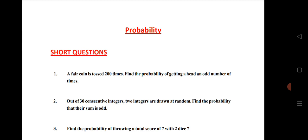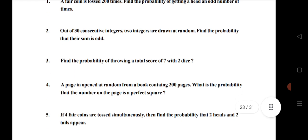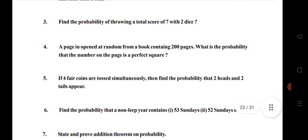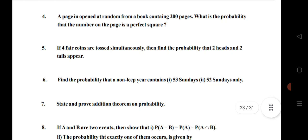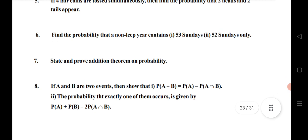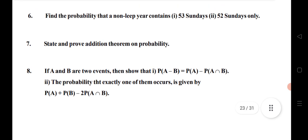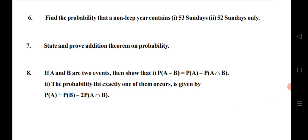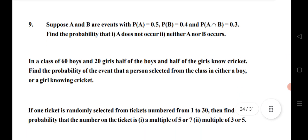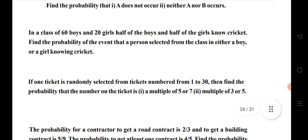Probability is for SAQ and LAQ. First question: a fair coin is tossed 200 times; out of 30 integers, find the probability; drawing a score of 7 with two dice; a page is opened randomly — a 4 marks very important question; a fair coin tossed simultaneously — find the probability that two heads and two tails appear; leap year and non-leap year question is very important; addition theorem — sometimes 7 marks, sometimes 4 marks. 8th, 9th questions are also very important. 10th question: in a class of 60 boys and 20 girls, half the boys and half the girls know cricket — find the probability that a person selected from the class is either a boy or a girl knowing cricket.